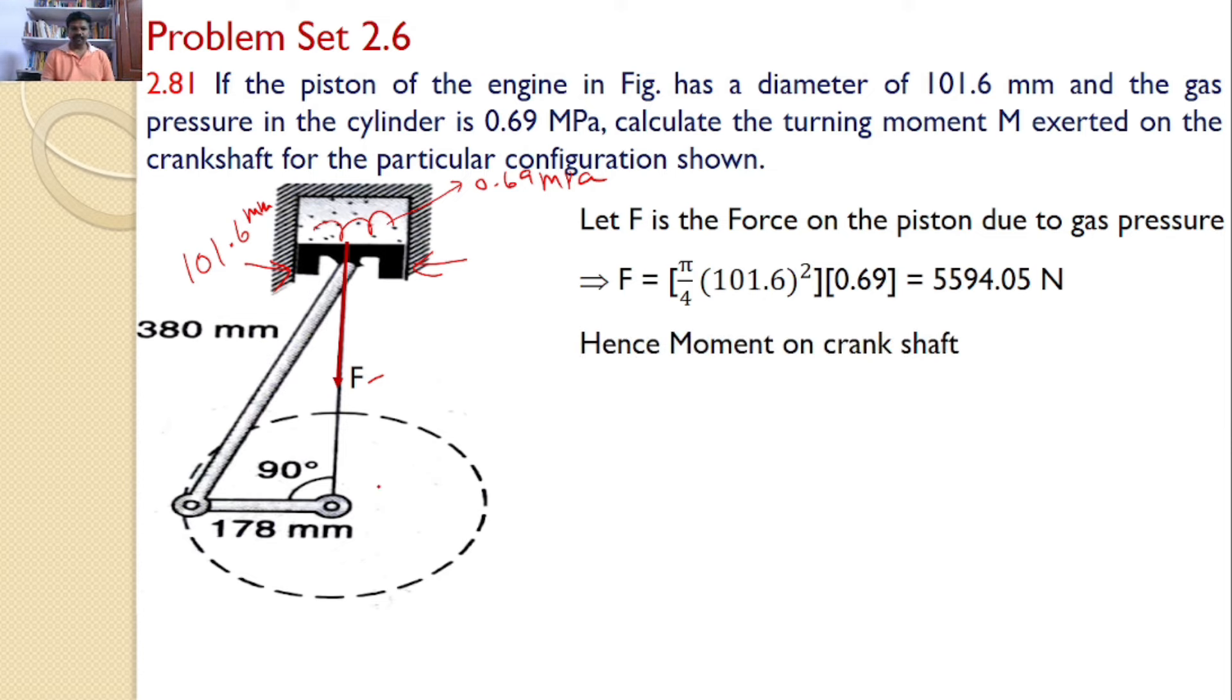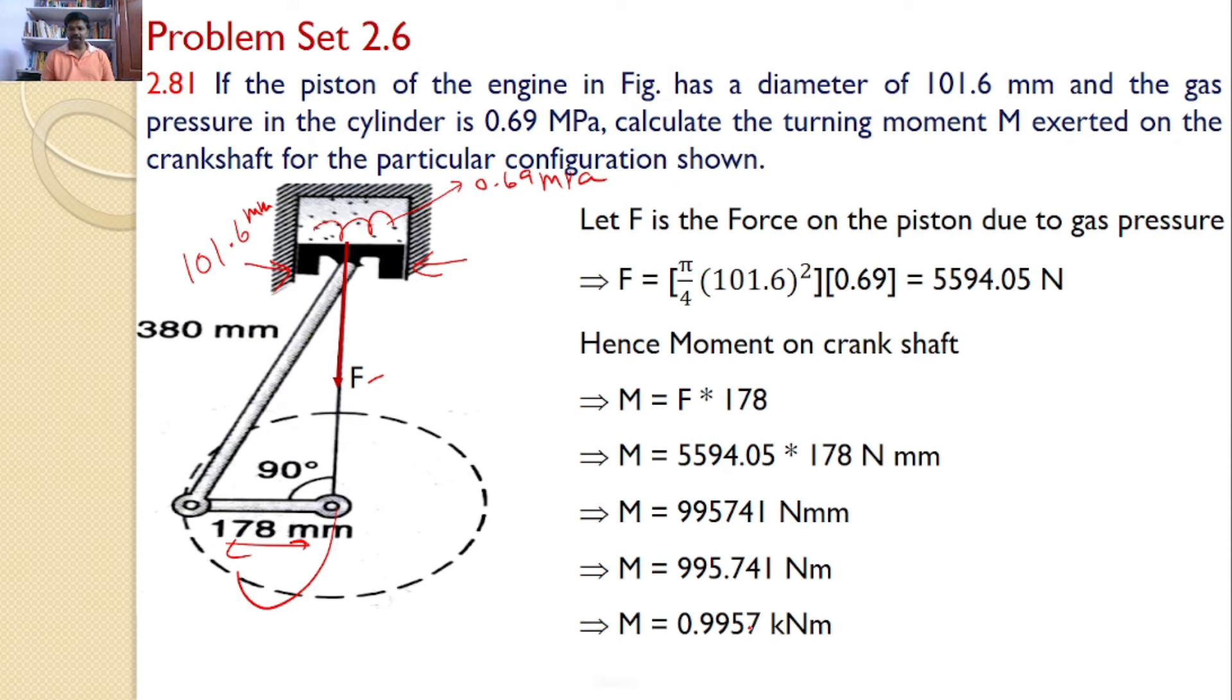Hence, the moment on the crankshaft is equal to this force multiplied by this distance, that is F into 178 mm. So, 5594.05 into 178 newton mm, which is 995.741 newton meter, which is approximately equals to 1 kilonewton meter is the answer for the given problem.